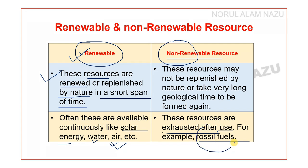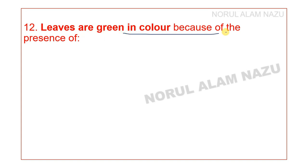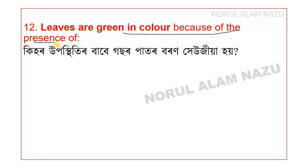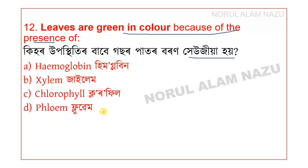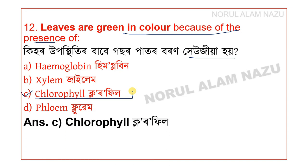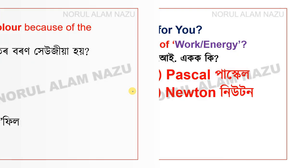Question 11: Leaves are green in color because of the presence of? The options include hemoglobin, chlorophyll, and others. The answer is option C — chlorophyll.